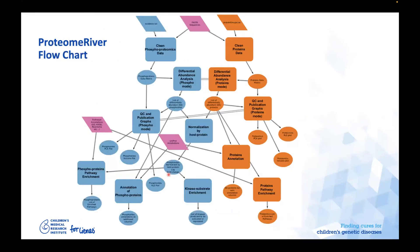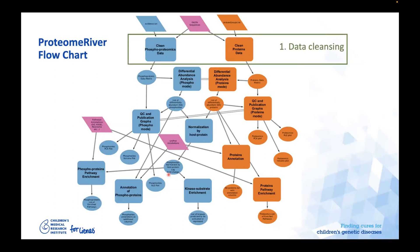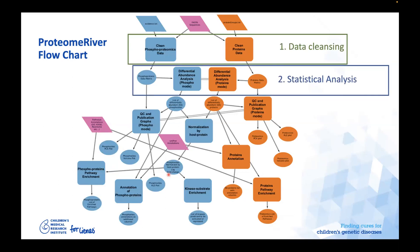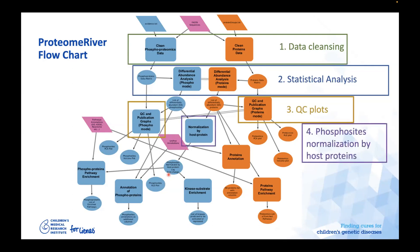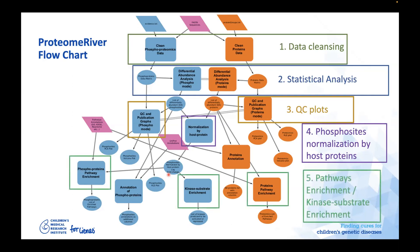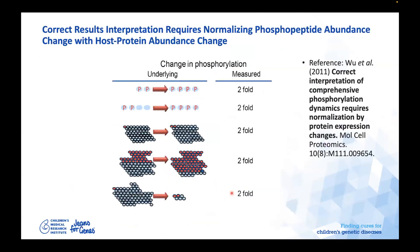This is a basic outline of the pipeline. You first do some data cleansing, then do statistical analysis using the limma package — there are also other statistical tools implemented. You create some QC plots. For phosphosites, you need to normalize by the host protein abundance, which I'll discuss in the next slide.